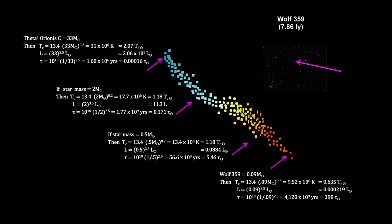At the other end, Wolf 359 is just under a tenth of the mass of the sun, and will remain a main sequence star almost 400 times longer than the sun.